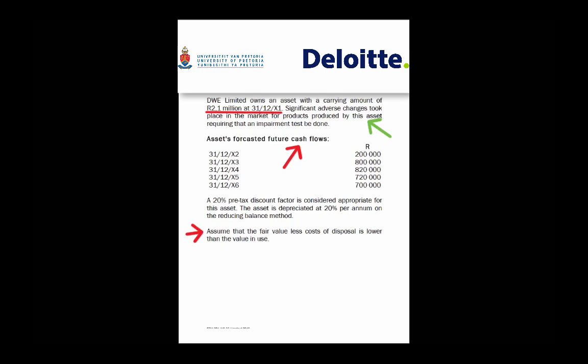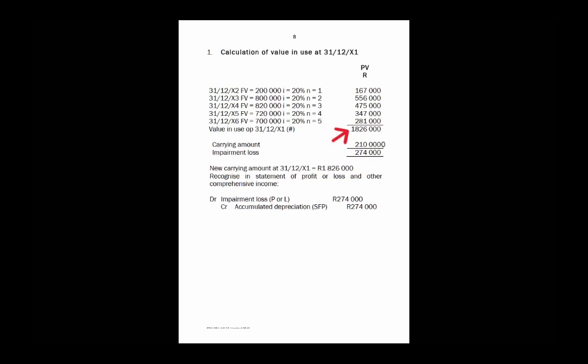In this case, the assumption is that the fair value less costs of disposal is lower than the value in use, so you must use the value in use. Focusing on the future cash flows for value in use, a timeline helps illustrate what we are doing — you have budgeted future cash flows that need to be discounted back to a present value. Using the amounts given, the value in use is calculated at R1,826,000. Compared to the carrying amount of R2.1 million, the difference of R274,000 is journalized to account for the impairment loss for the period.